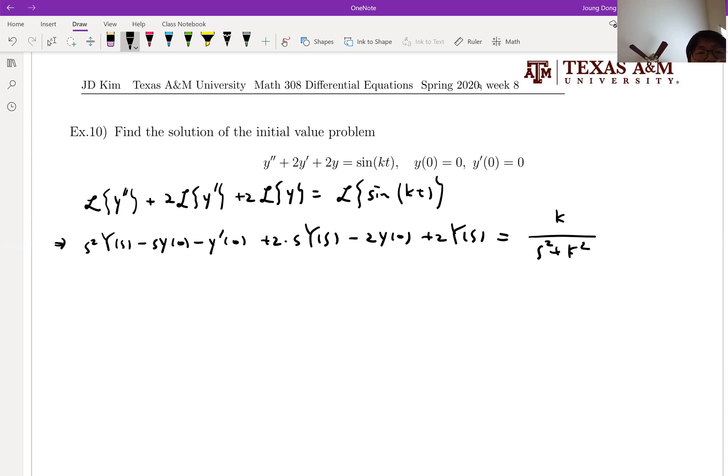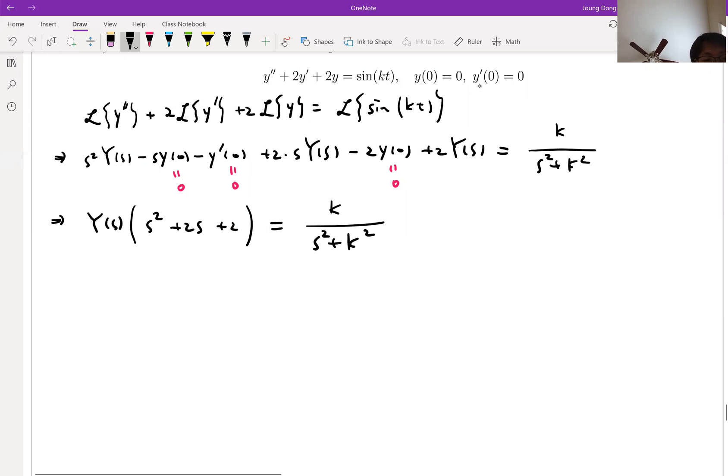Then now, we're going to do the same process with the previous problem. We're going to apply all the initial conditions at t equals 0. Then we're going to gather all the y terms and let me write y as first and big parenthesis: s square plus 2s plus 2, and that is equal to k over s square plus k square. And next thing is obvious, right? We're going to divide by s square plus 2s plus 2 on both sides. Then this will be ys equal to k over...